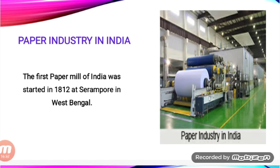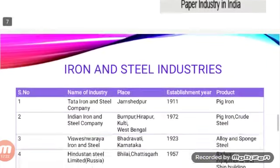Raw materials for the paper industry include wood pulp, bamboo, salai and sabai grass, waste paper, and bagasse. Bagasse is a by-product of the sugar industry. West Bengal is the largest producer of paper, followed by Madhya Pradesh, Odisha, and Tamil Nadu.